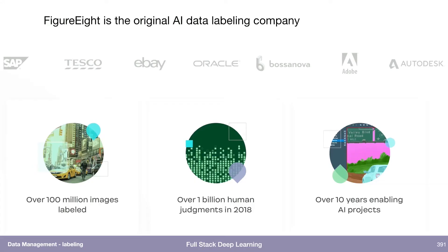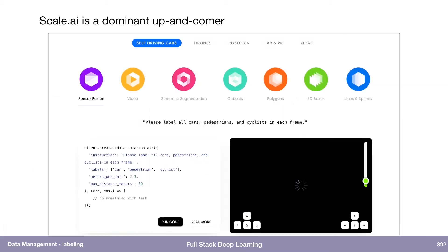Figure Eight — the original data labeling company — has labeled over 100 million images and over 1 billion human judgments in 2018 alone, and they've been around for over a decade. So that's definitely a contender. Scale.ai is kind of an up-and-comer that seems to be very dominant, especially in the self-driving car space.